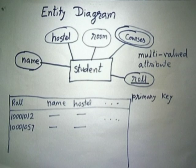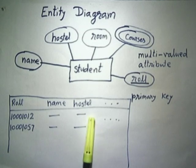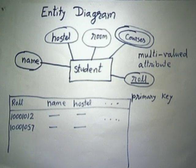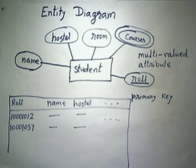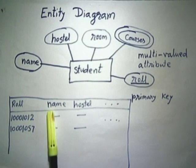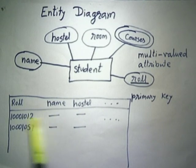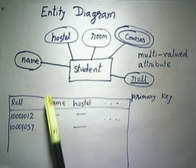We can represent information about students in a table, where the column headings are all the attributes identified in our model, and each row corresponds to one entity. Information about one student — for example, roll number 100101 — with name and other details is written in one row, and another row represents another student. The number of rows equals the number of students in the institute. This is the fundamental of entity modeling.